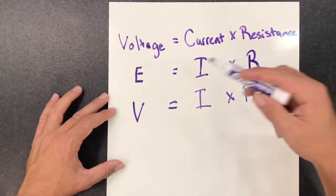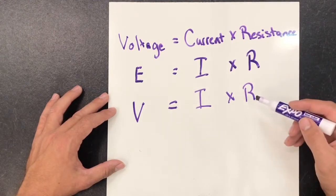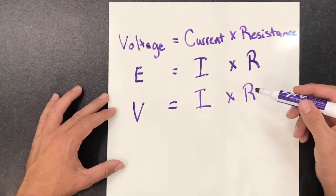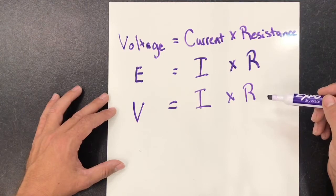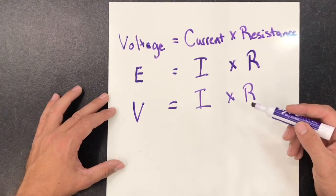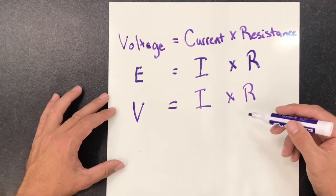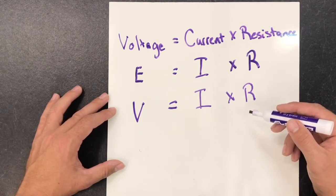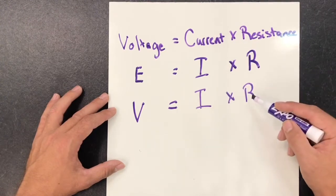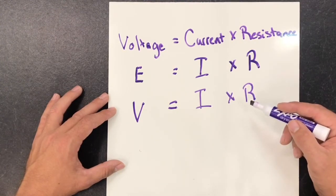The reason we use Ohm's Law is because if you have two of the units, you can figure out the third by doing basic math. A lot of times you'll know the voltage from the power supply and the resistance from testing with an ohmmeter, but you usually don't know the current flow. So before you plug an item into a circuit, you can do Ohm's Law and figure out the current flow before you damage a component. Components come with current ratings, so you can determine if an item will work or get blown out.